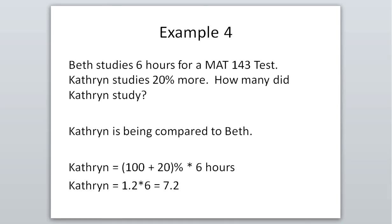For example: Beth studies six hours for a math test, and Catherine studies 20% more. We take Beth's value and add 20% to it. So Catherine = (100 + 20%) × 6 hours = 120% × 6 = 1.2 × 6 = 7.2 hours. So if Catherine studied for 7.2 hours, that is 20% more than Beth's six hours.